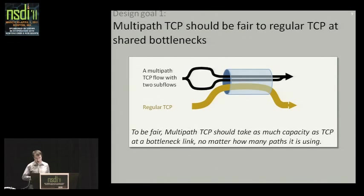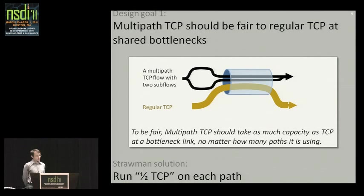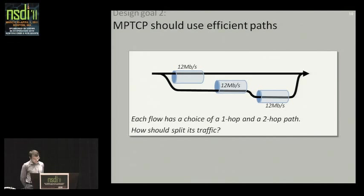Design goal one is something everyone thinks about with multipath. Here I've drawn a single bottleneck link with two flows — one is a multipath flow with two subflows, competing with a single regular TCP flow. Common sense says we would like to be fair: it's not fair if the multipath flow grabs more bandwidth just because it has more subflows. A straightforward solution is to make each subflow run congestion control like TCP but half as aggressive. Design goal one is obvious, so let me move on.